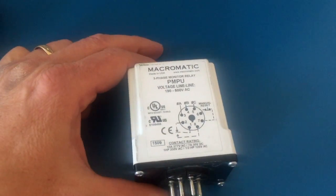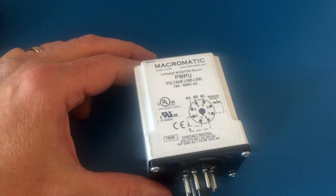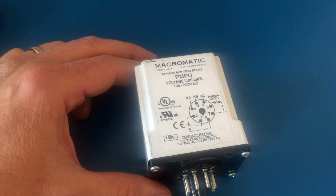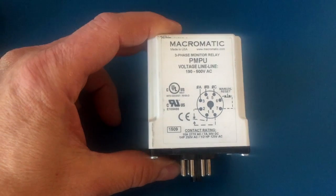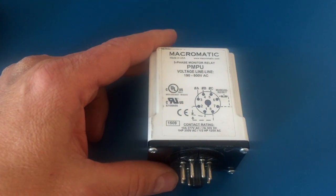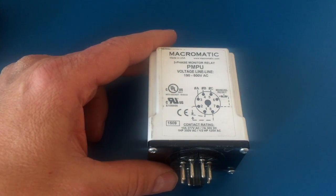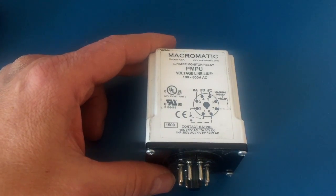Phase failure relays, also known as phase monitors, are installed to protect expensive motors from different unacceptable conditions. You'll see these in many mag starter panels and inside equipment like large air handlers to protect expensive motors and the associated equipment.